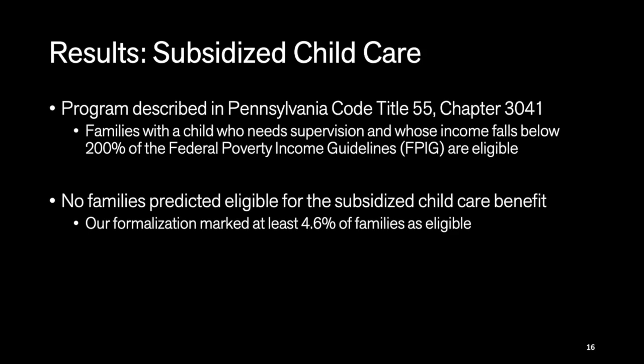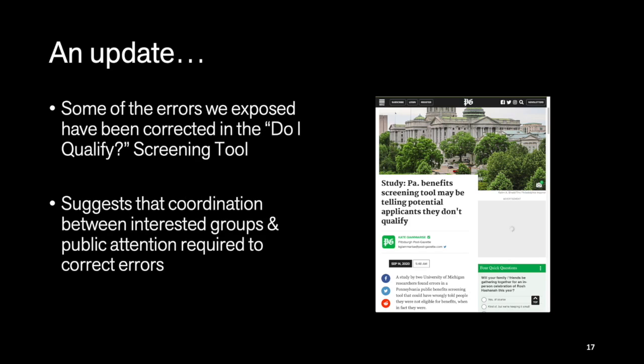So, for at least a year, any family who turned to this tool wanting to know whether they might be able to get relief from the staggering costs of child care in America received the advice—the incorrect advice, in some cases—that they didn't qualify for benefits. Every other benefit we tested also had errors, though these were more nuanced, and we could trace some of them to specific provisions in the eligibility rules that the screening tool incorrectly implemented.